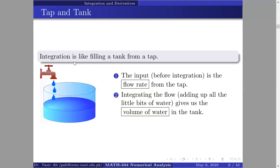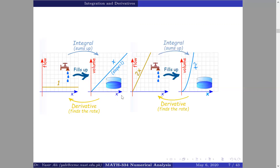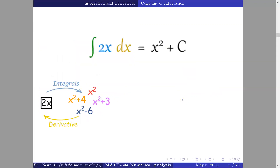Consider a tap filling a tank: the flow rate and volume of the water are linked in a way that explains the relationship between differentiation and integration. If the flow rate is constant, the volume increases such that its slope is constant. In other words, the flow rate is given as the slope of the volume curve — this is the relationship between integration and differentiation.